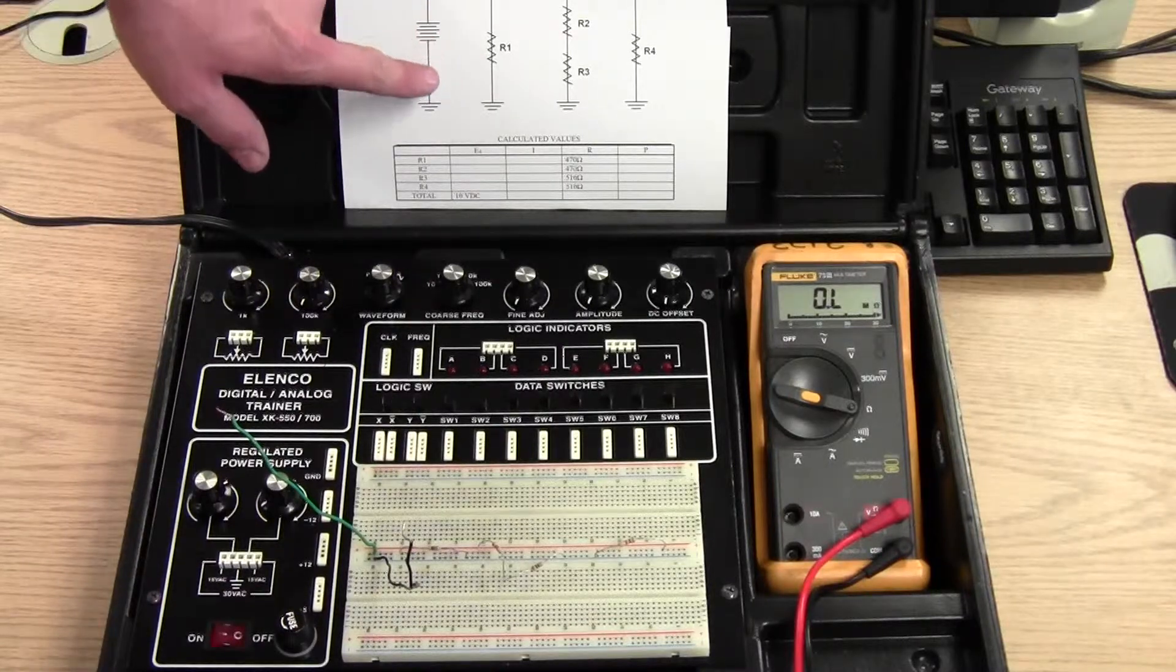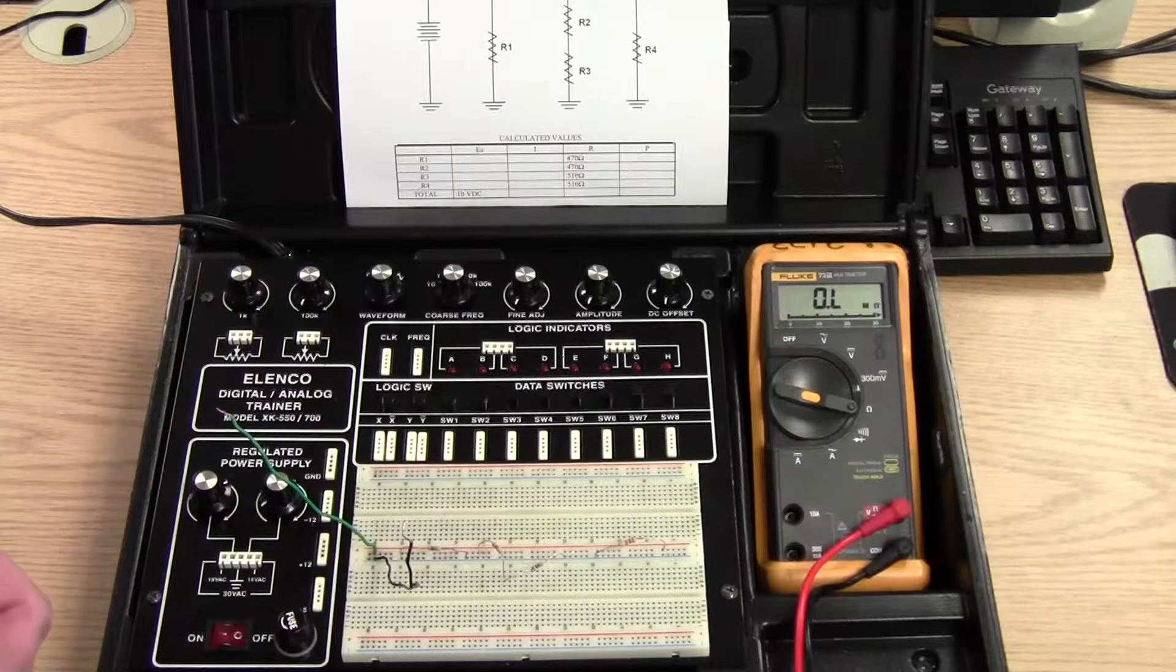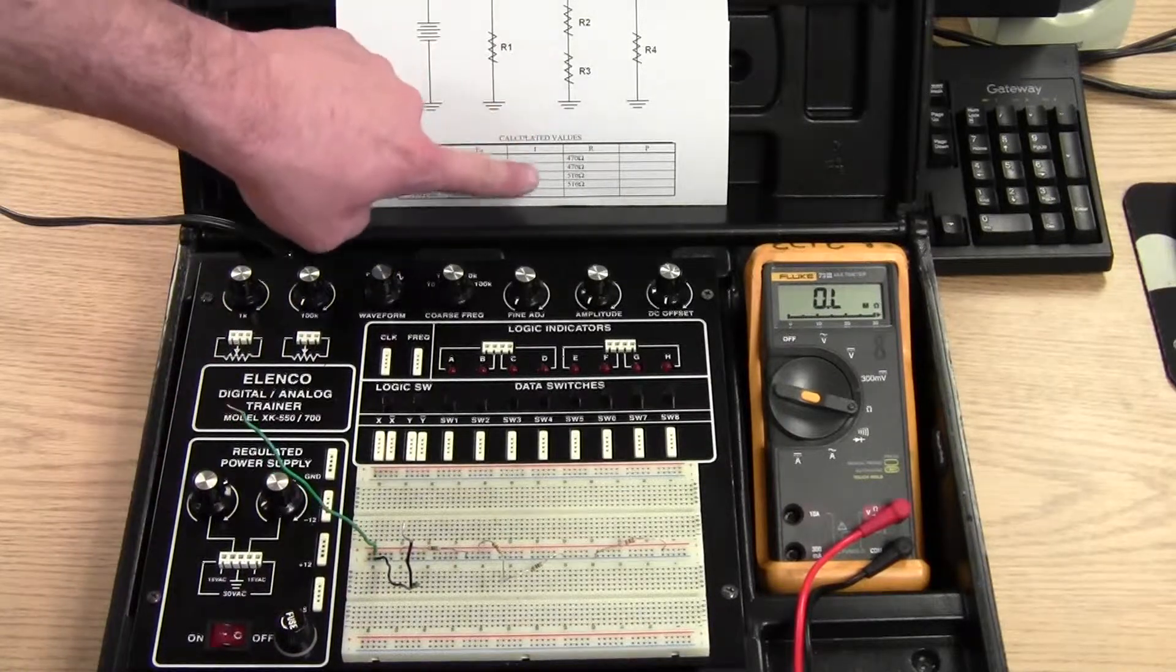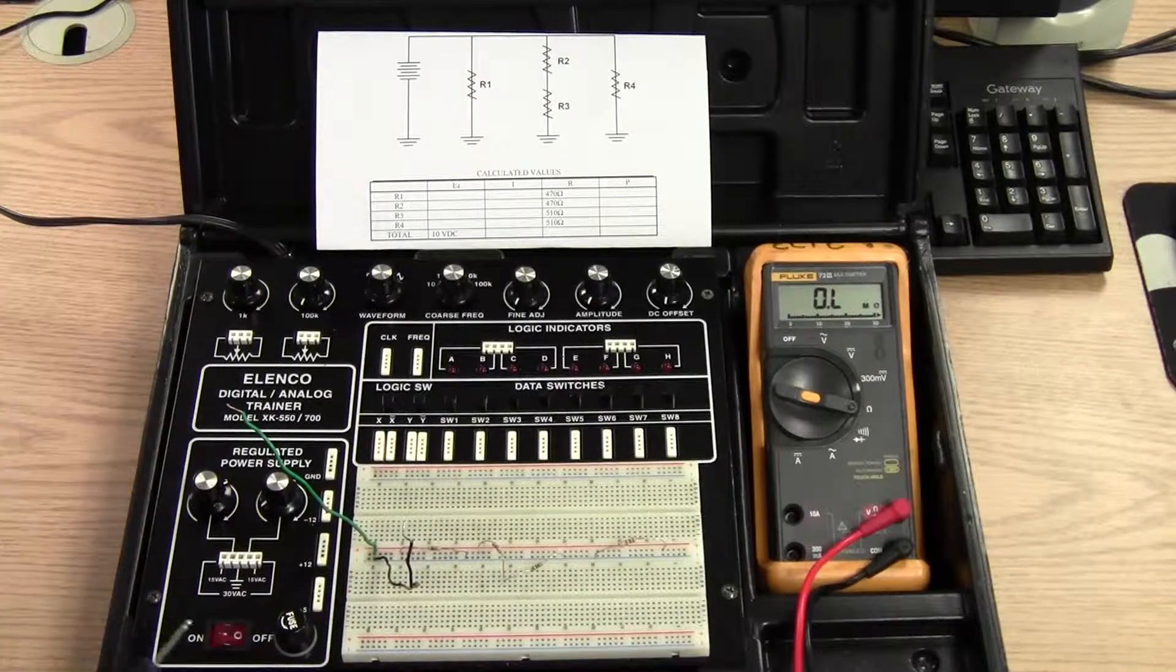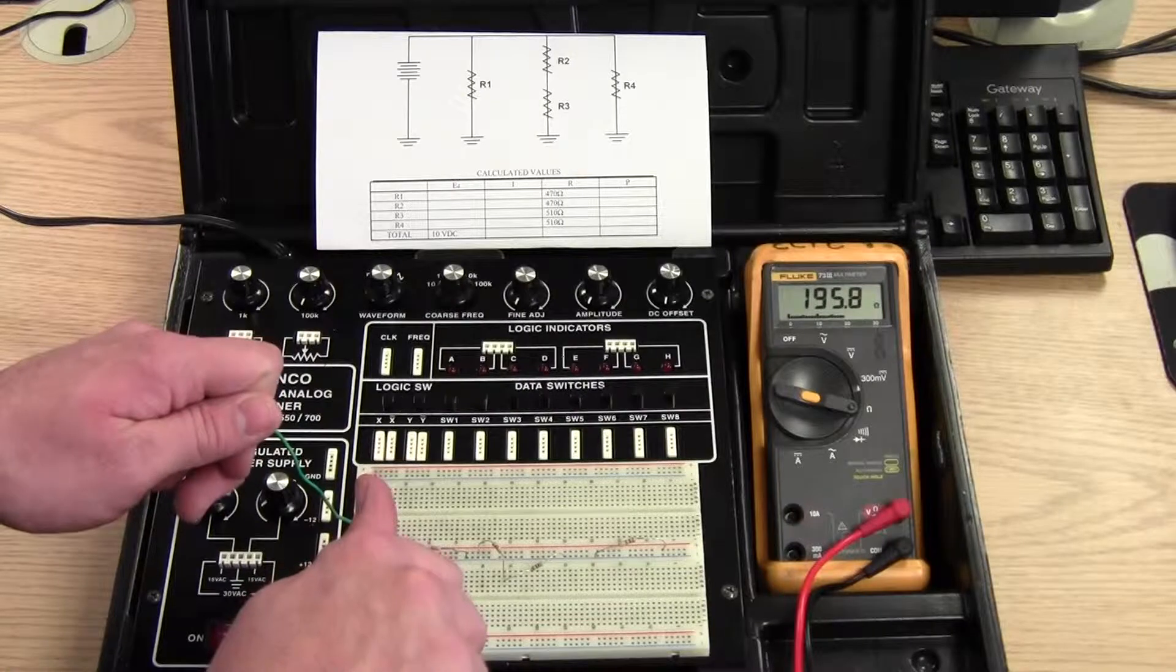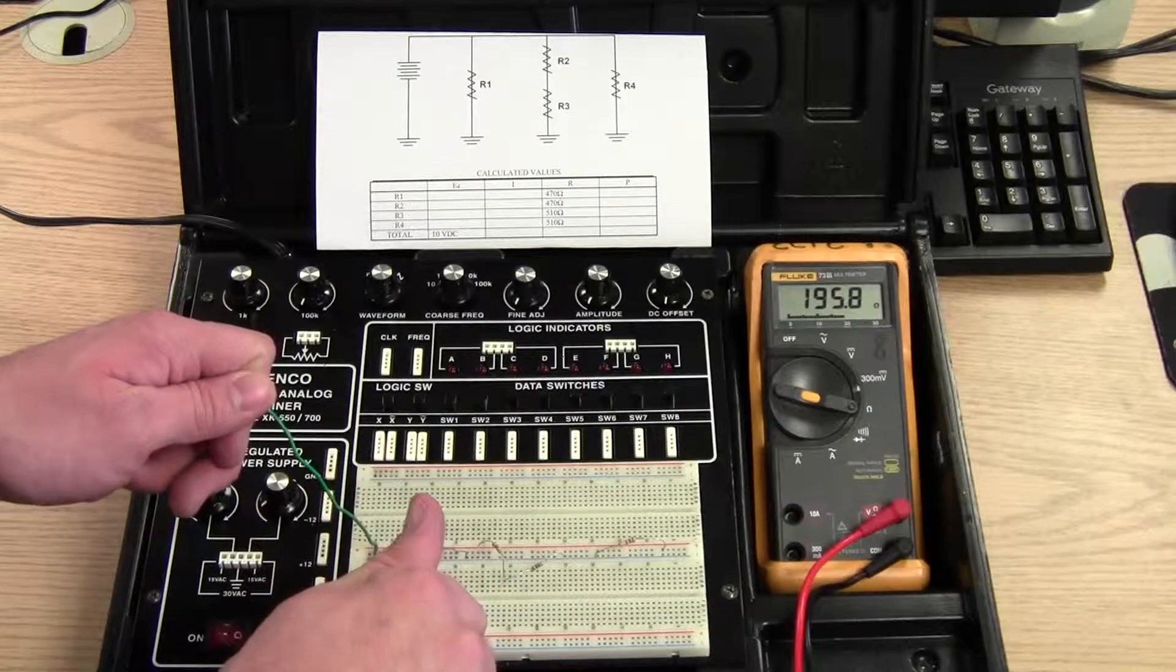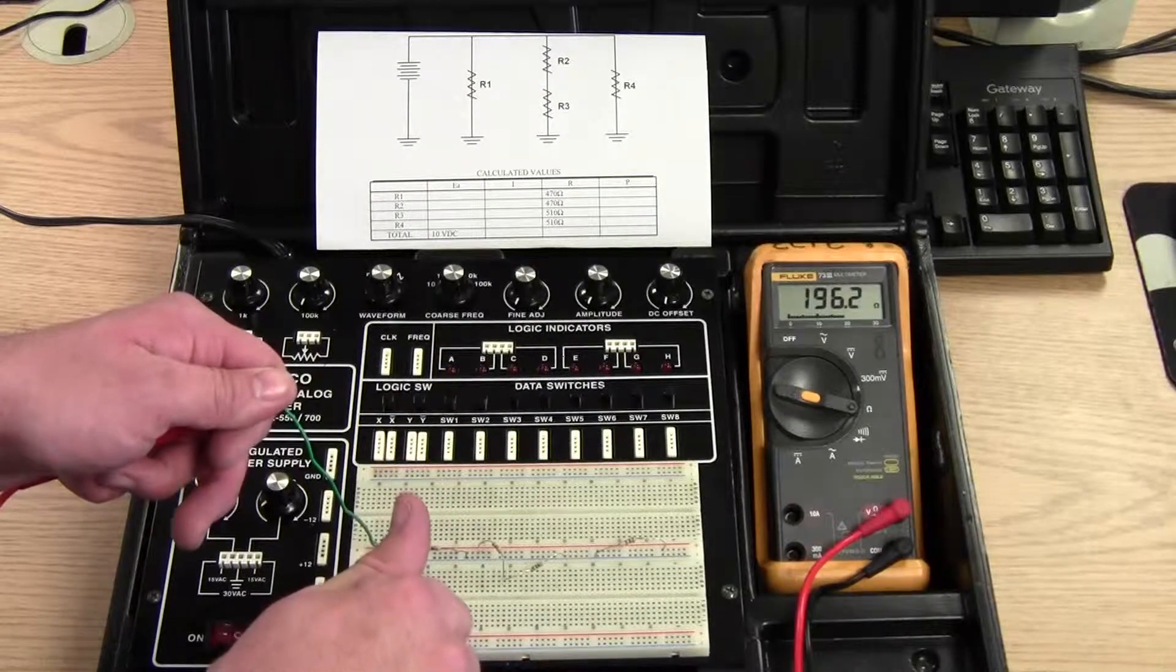Our lowest resistive branch should be this R1, the 470 ohm resistor. This branch is going to add up to 980 ohms. So that number should be, that's a valid number going by our parallel circuit rules of total resistance being lower than the lowest resistive branch.